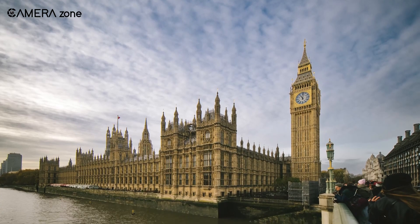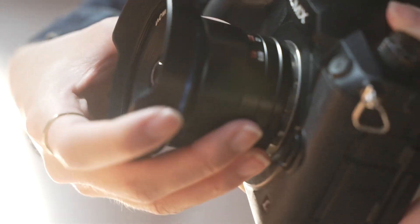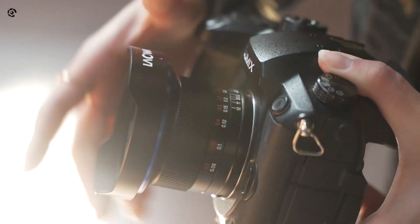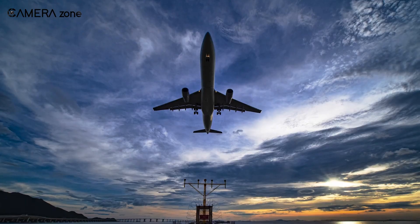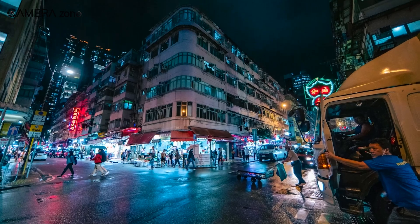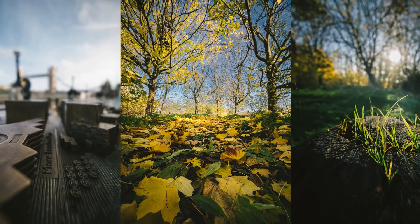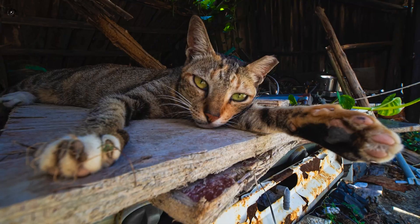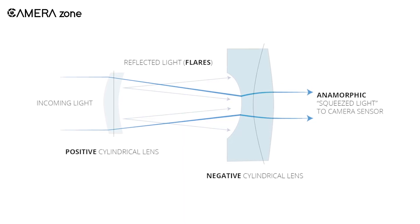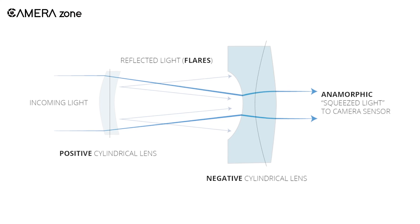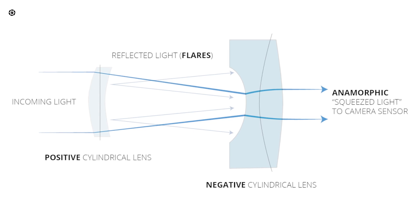Now let's talk about depth of field — how much of the image is in focus. Anamorphic lenses often create a shallower depth of field, giving you that creamy out-of-focus background that makes subjects really pop — part of what gives some films that cinematic look. Spherical lenses offer more control: you can get shallow depth of field if you want, but it's easier to keep more in focus too. Anamorphic lenses are also known for their unique horizontal lens flares, which you've probably seen in sci-fi movies.